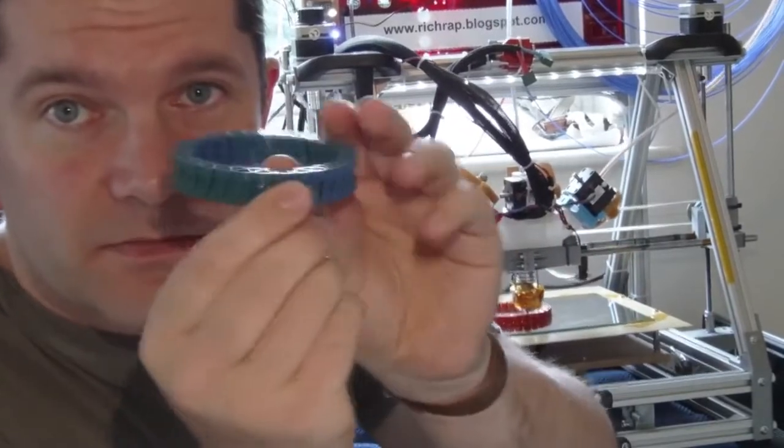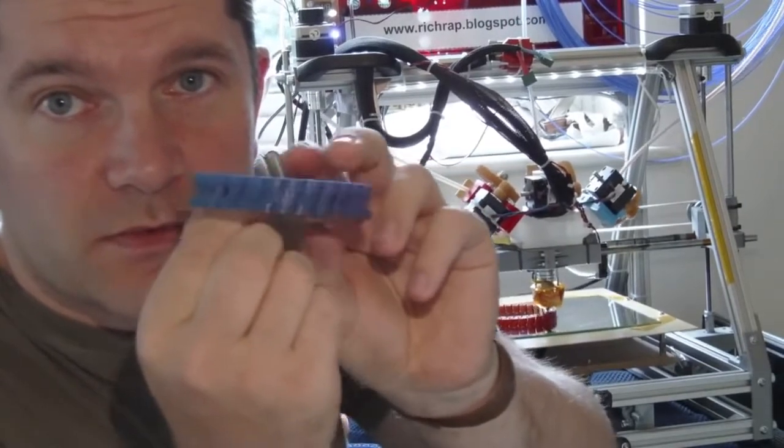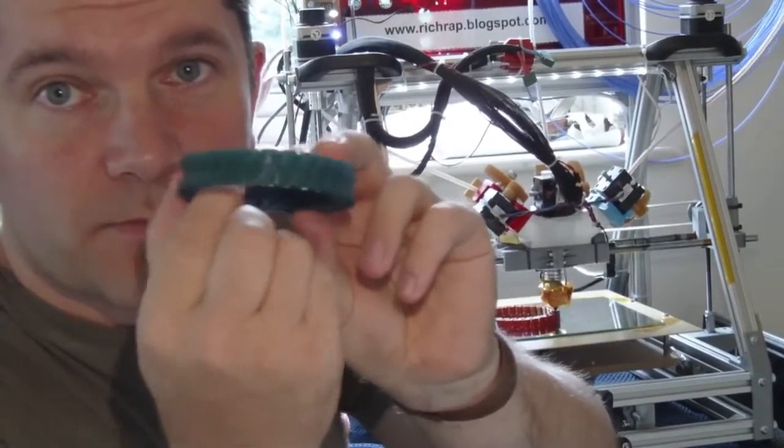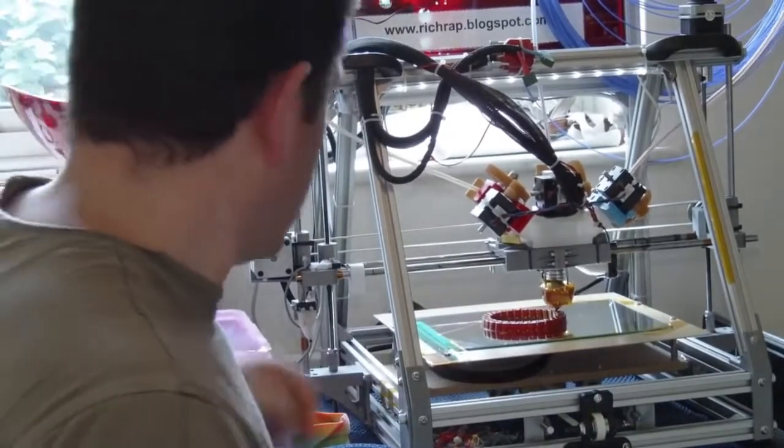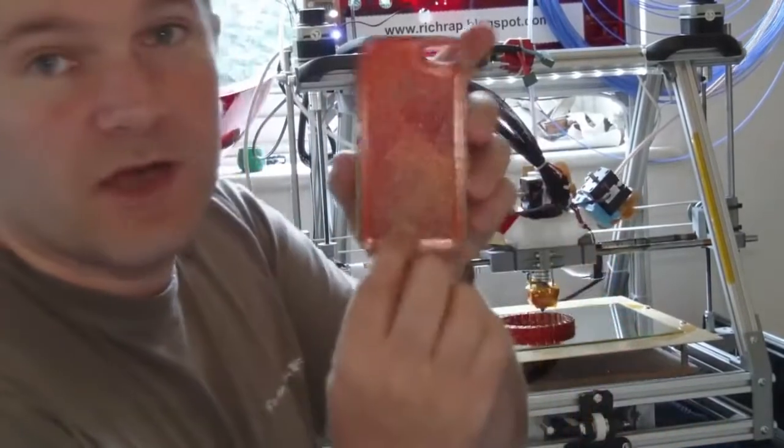As you turn it round, it changes from green, blue and then purple. And of course, iPhone case.